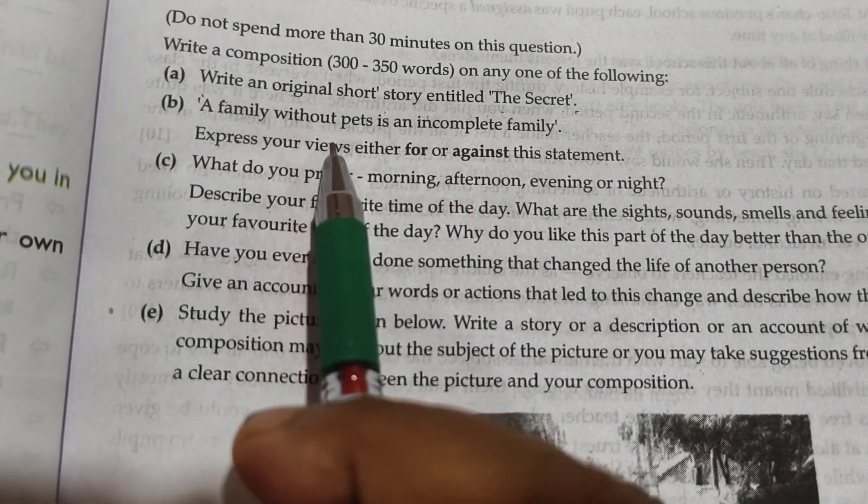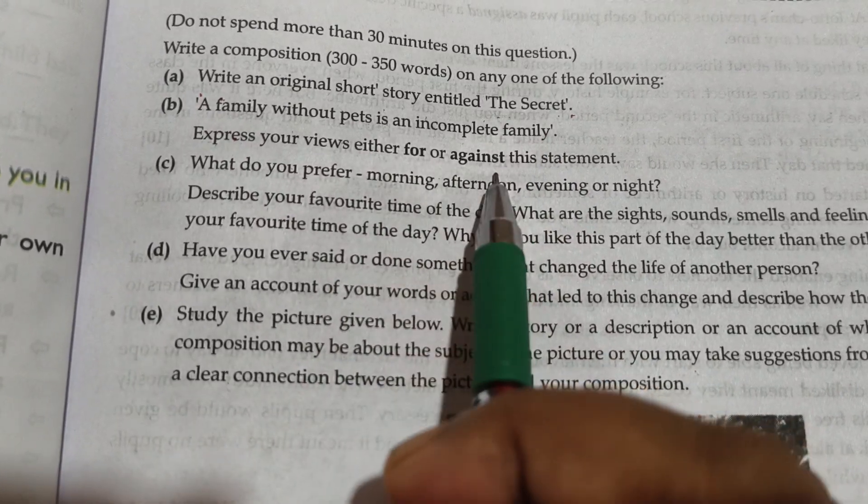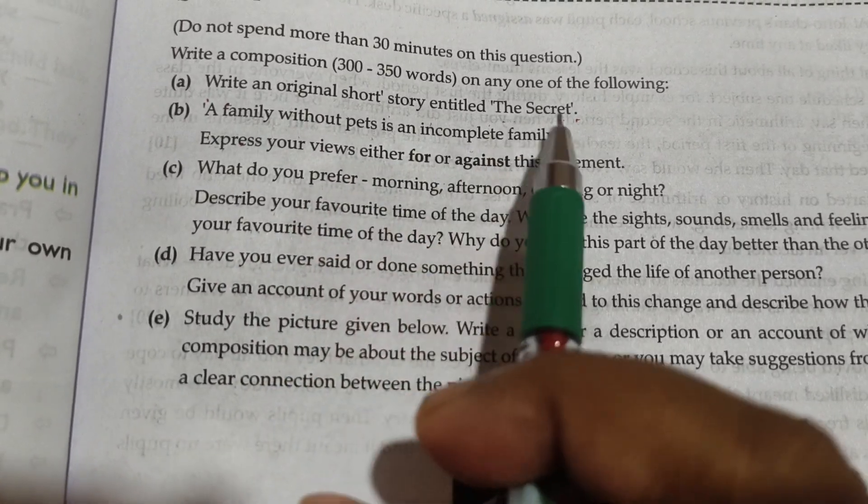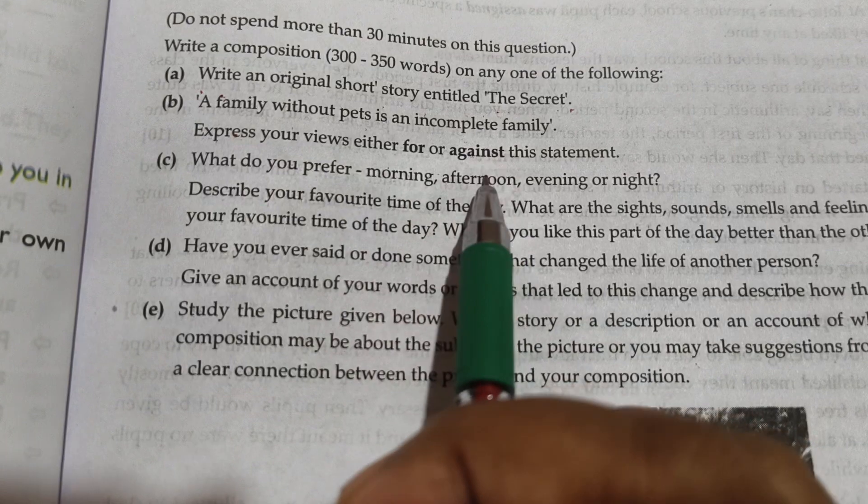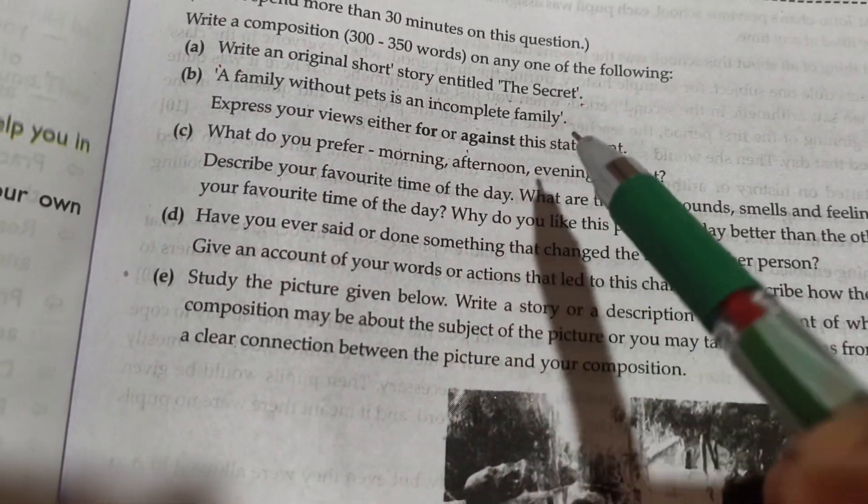A family without pets is an incomplete family. For or against. Tormane, acta family te pit thak li shita complete family. Et or foray or against. Foray di loo point di ta habi, against di loo point. Thik kata hai.